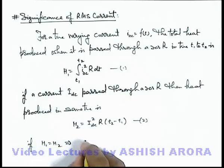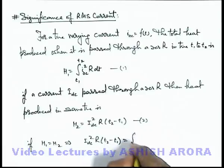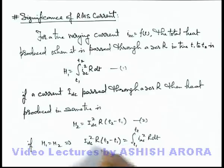see what we are getting here. This idc square R times t2 minus t1 is equal to integration from t1 to t2, iac square R dt. Here R gets cancelled out and see what we are getting for the value of idc.